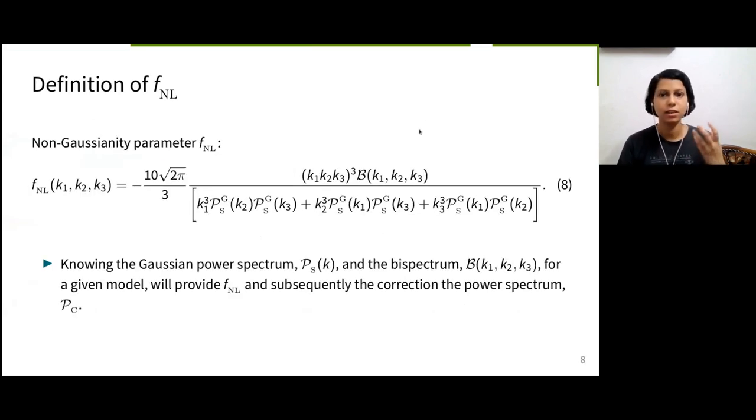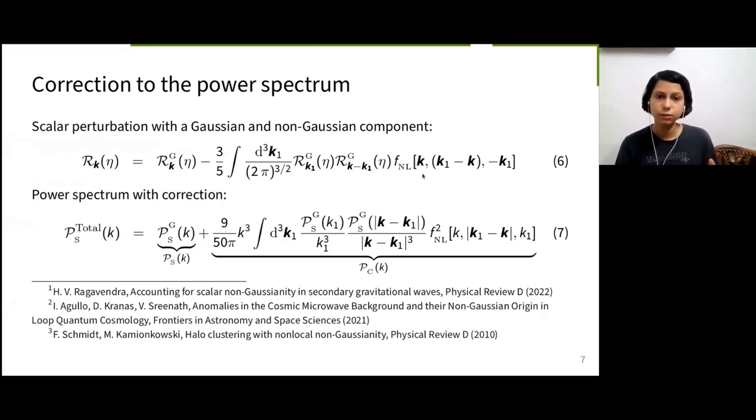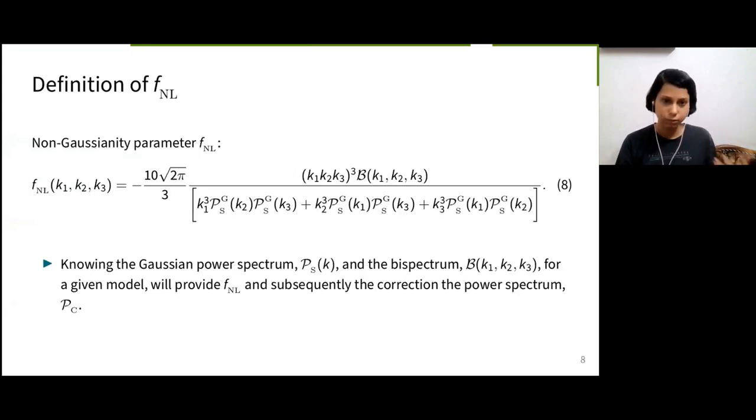But to find this corrected power spectrum PC, we need to know FNL. So, we take three-point function of equation 6, as you can see here. Using Wick's theorem, we can write three-point function in terms of FNL and PS. Inverting this equation gives the definition of FNL in terms of bispectrum and PS as given in equation 8.